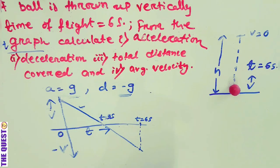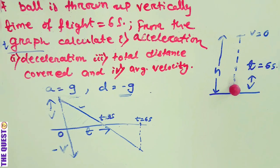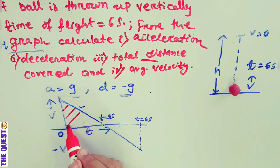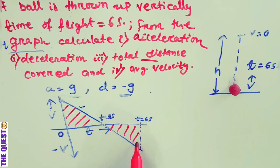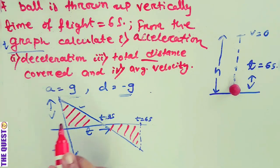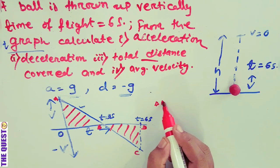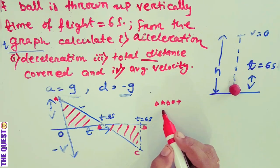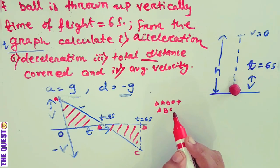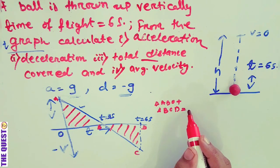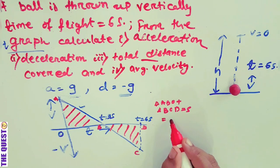The total distance covered is equal to the area under the velocity-time graph. Let us label the graph points as A, B, C, and D. The total distance covered equals the area of triangle ABO plus the area of triangle BCD, which gives us the total distance covered. This equals half the base times height for each triangle.